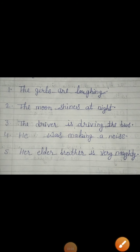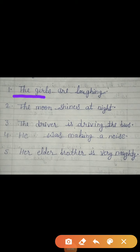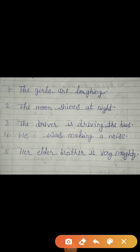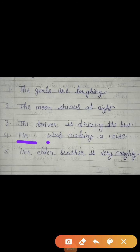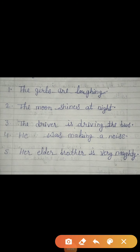Like first: the girls are laughing. The moon shines at night. Third: the driver is driving the bus. Fourth: he was making a noise. Fifth: her elder brother is very naughty. So in this way, you can make complete sentences by adding an appropriate predicate.